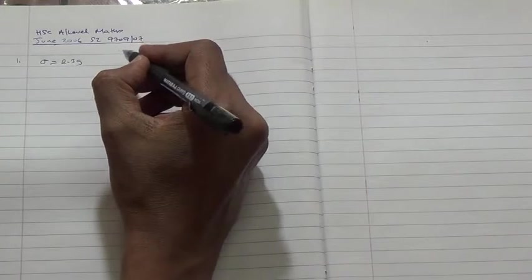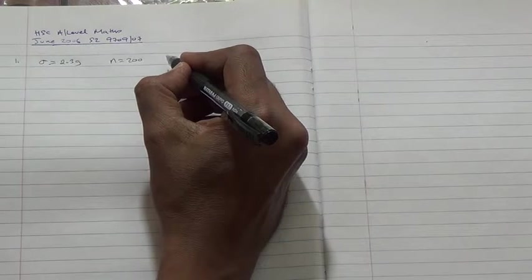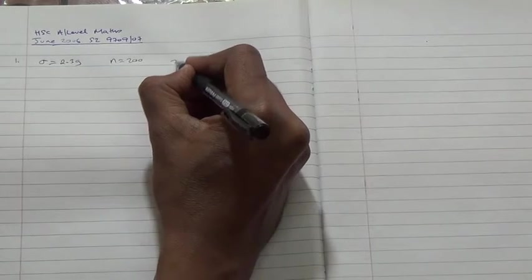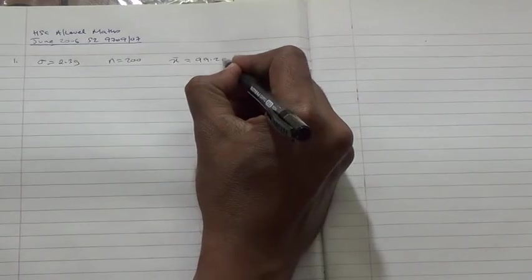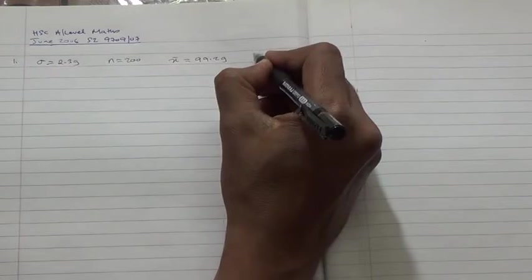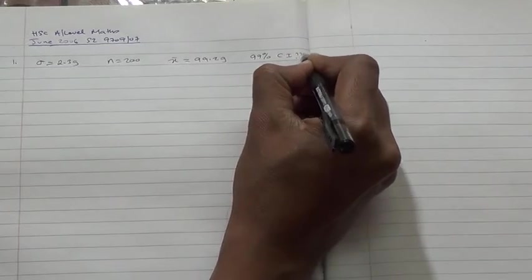Right. So we have for this question that the standard deviation has been given as 2.3 grams. And also, we know that a random sample of 200 packets is taken. The mean weight, x-bar, is equal to 99.2 grams. And we have to find a 99% confidence interval. That's the question.